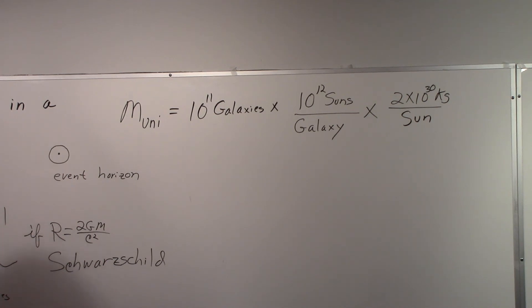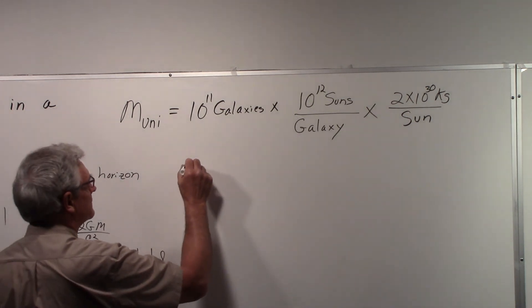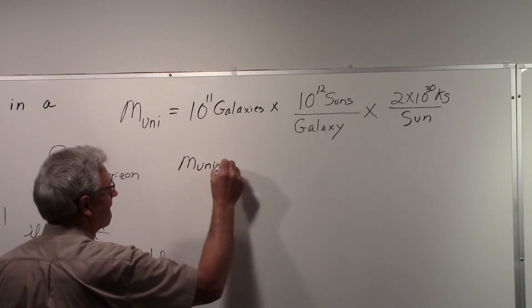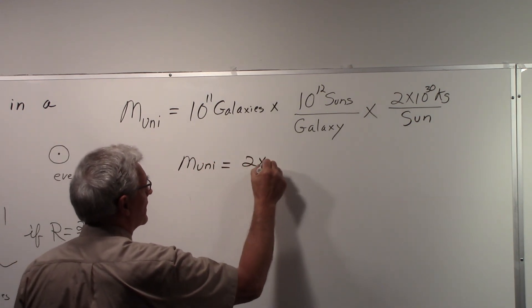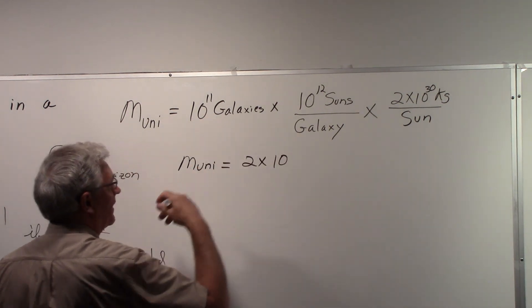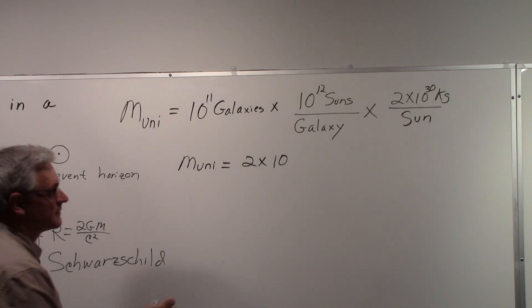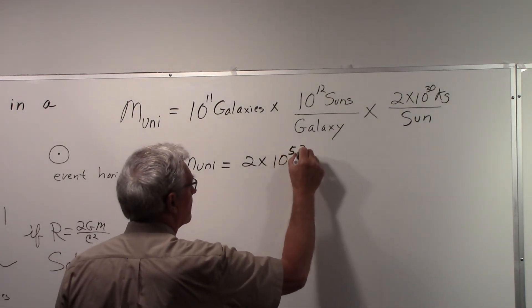So we can estimate the mass of the universe, multiply this all out, and we would get the mass of the universe is going to be equal to 2 times 10, and then add up all the exponents and you get 53 kilograms.